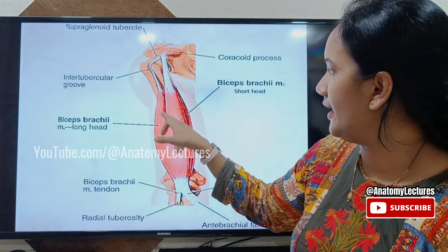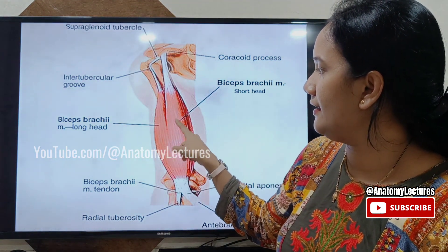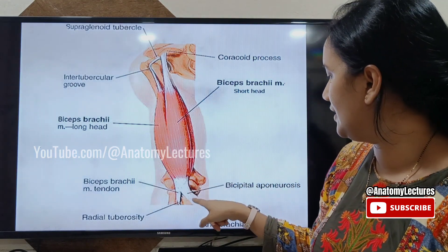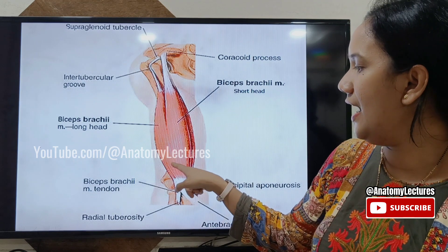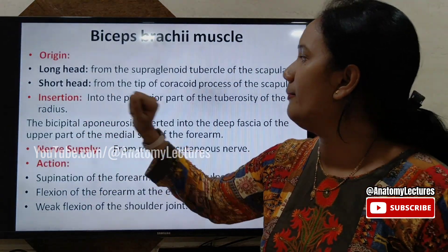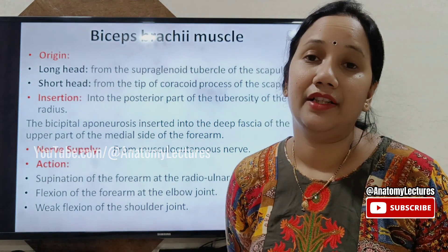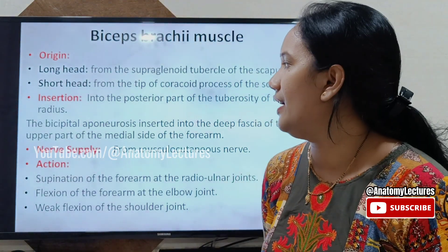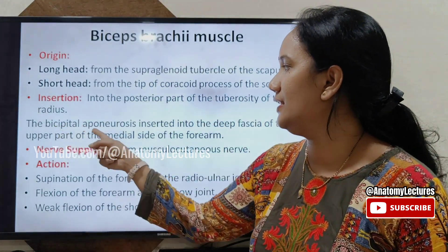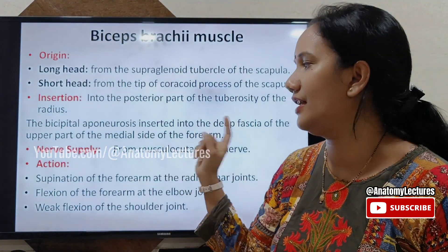The two heads of biceps — the long head and the short head — travel and then unite to form a single muscle belly. The insertion of biceps is into the posterior part of the radial tuberosity on the upper end of the radius. Biceps also gives a bicipital aponeurosis, which is inserted into the deep fascia on the upper medial side of the forearm.